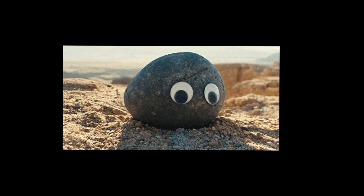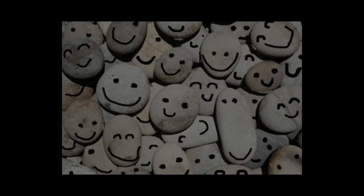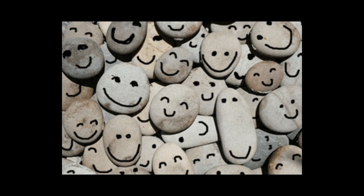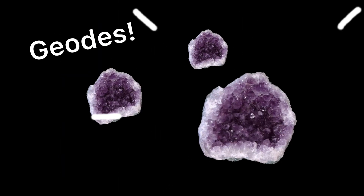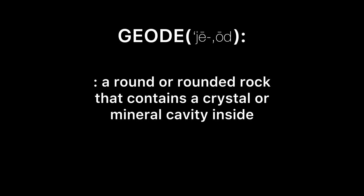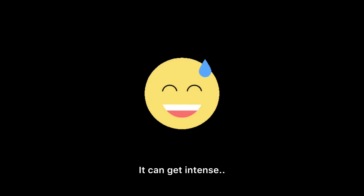Before we dive too deep into geodized fossils today, I'd first like to briefly talk about geodes and the two ways that we know they can form. First off, a geode by definition is a round or rounded rock that contains a crystal or mineral cavity inside, and that's pretty much all I want to share on that for now.